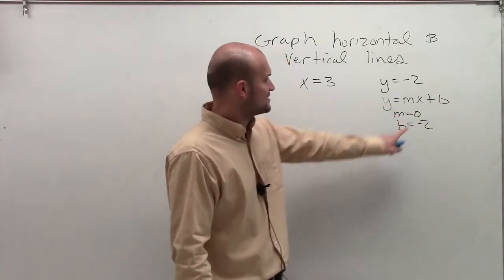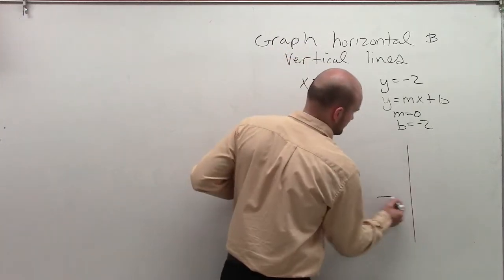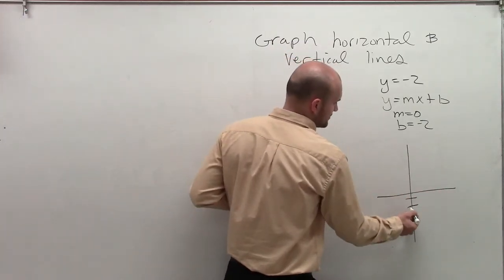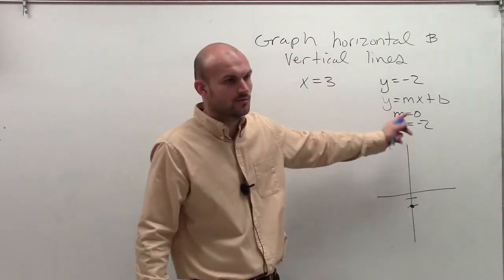So what you could look at is, to go to this line, if I was going to start graphing this, you go down negative two, right? That's where you start. But then our slope is zero, so where do we go?